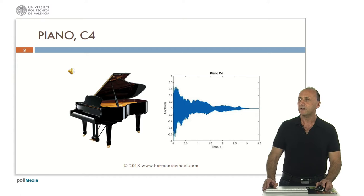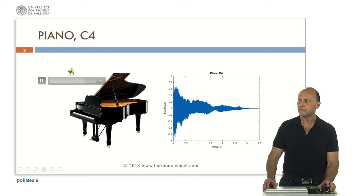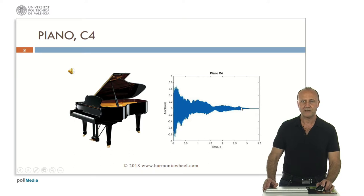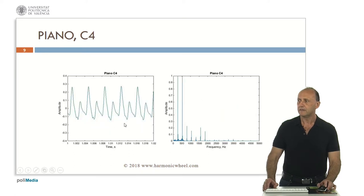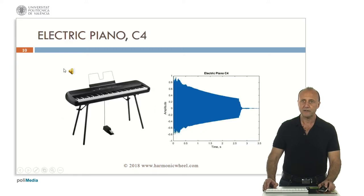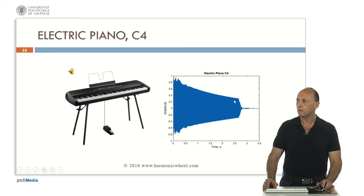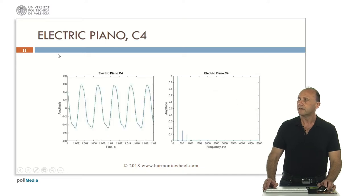This is the timbre of the piano — this is a C4. This is the envelope; there is an attack and then an attenuation. This is the typical waveform and this is the spectrum. This is an electric piano, C4. Now the attenuation is practically linear. This is the waveform and the spectrum.